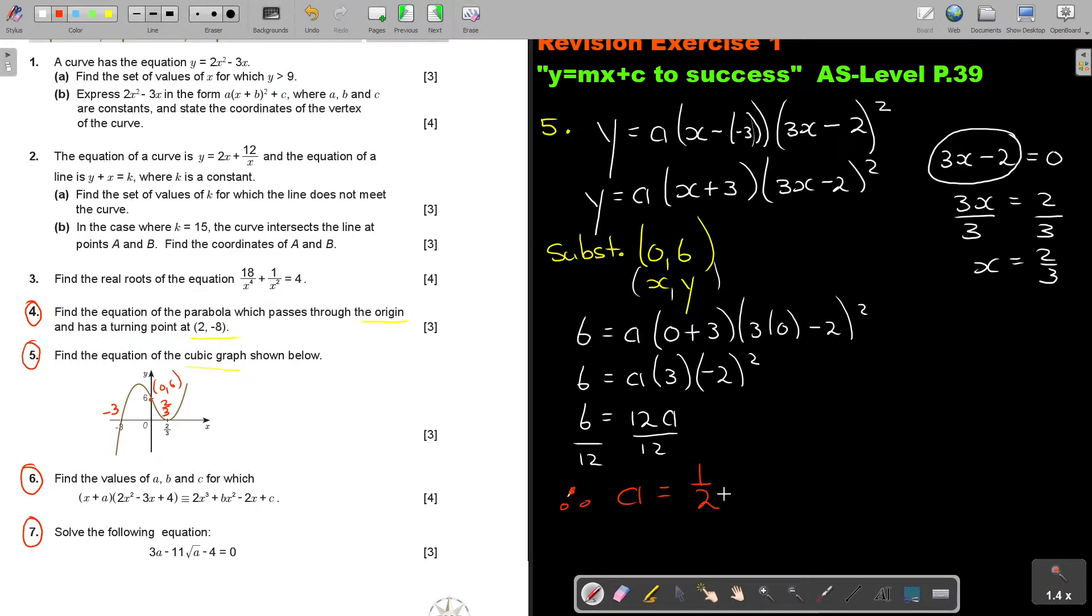And now I can basically substitute it in there now. Therefore, Y is equal to a half times X plus 3 times 3X minus 2 squared. I don't have to multiply that out. So that is going to be my final answer. And that's how we do that one.